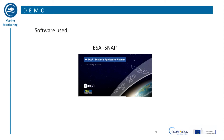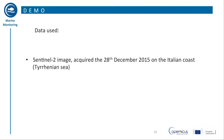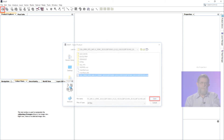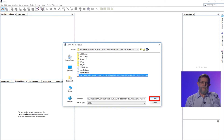The software used for the demonstration is free software made available by ESA, the European Space Agency — SNAP, ESA's Sentinel Application Platform. A Sentinel-2 image will be used, acquired on the 28th of December 2015, relating to a portion of the western Italian coast in the central Tyrrhenian Sea. The image was obtained from the Sentinel scientific data hub as a single zip file. Let's open the Sentinel-2 image — the XML file after decompressing the zip file.